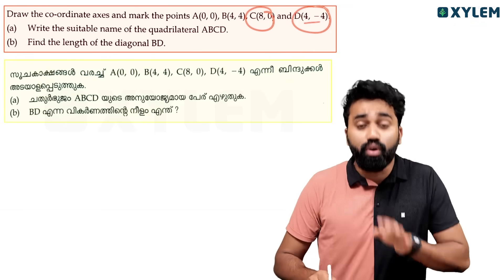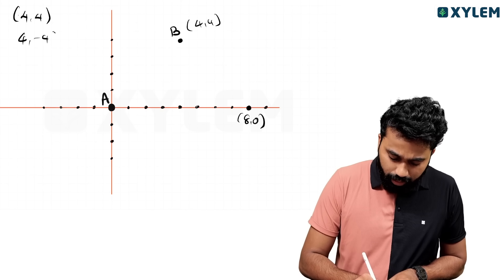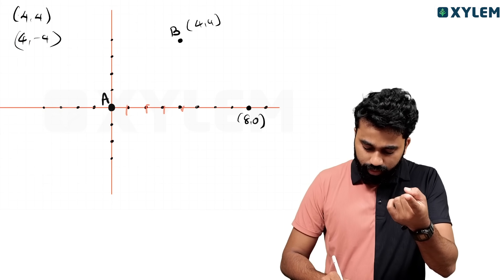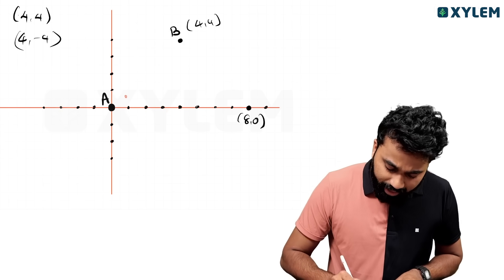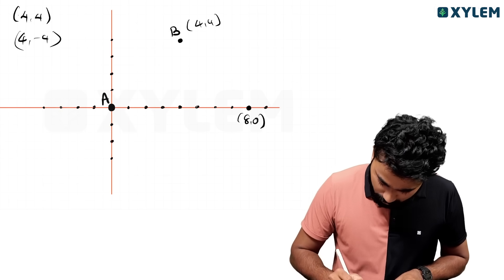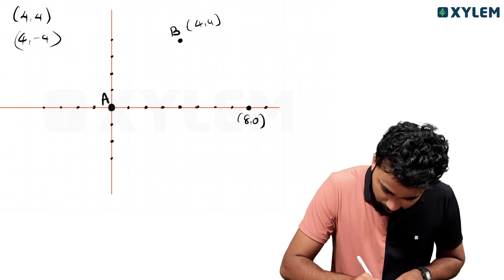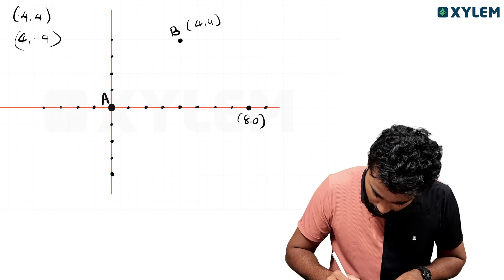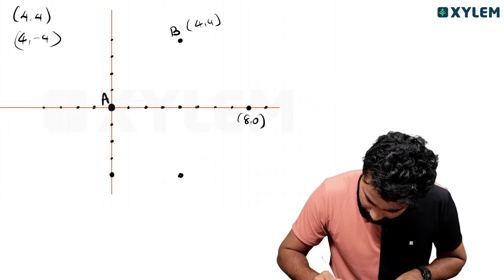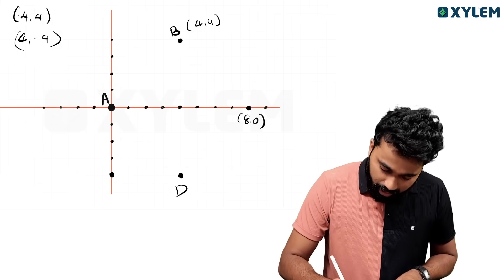Now, point D is at (4, -4). x is 4: count 1, 2, 3, 4. y is minus 4 — y goes both positive and negative. Minus 1, minus 2, minus 3, minus 4. So D equals (4, -4). x is 4, y is minus 4.